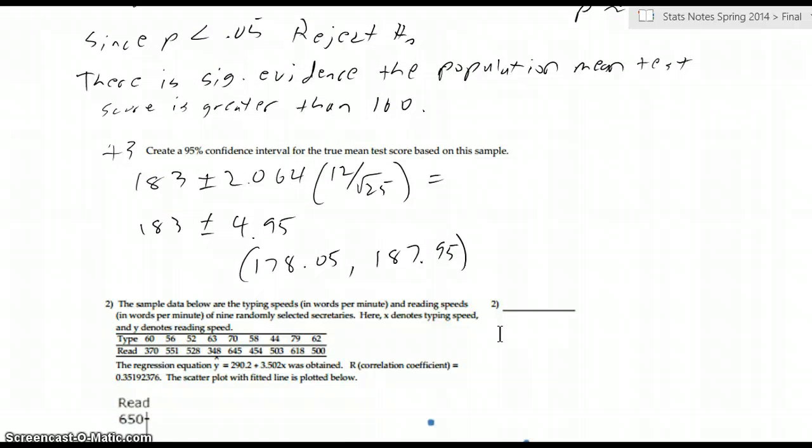And then we did a 95% confidence interval. Again, I use this T right here. So this 2.064 comes from the T table, 24 degrees of freedom, 95% confidence. So we're 95% confident the true mean test score from this population is between 178 and 187. That's definitely higher than 160, which kind of backs up what we had there.